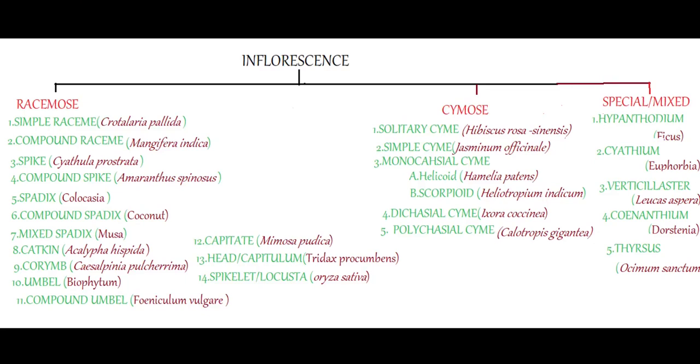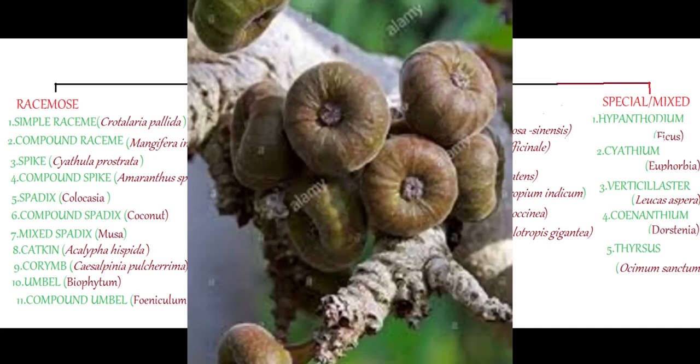The third type of inflorescence is mixed or special inflorescence, and there are 5 different types. The first is hypanthodium — the characteristic inflorescence of Ficus of Moraceae. Here the receptacle is modified into a cup-shaped structure that opens to the exterior by means of an ostiole, which is protected by downwardly projecting hairs. Inside this receptacle unisexual flowers are arranged. Male flowers are arranged towards the ostiole and female flowers on the rest of the inner surface. Example: Ficus.